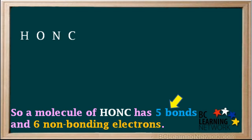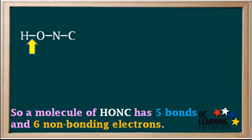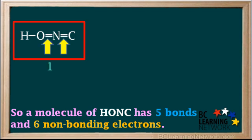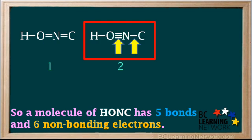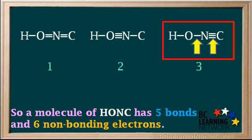We now find the possible arrangements which will give this molecule a total of 5 bonds. We start by putting a bond between each atom, which accounts for 3 bonds out of 5, so we need to add 2 more. Hydrogen can only form a single bond, so that bond must remain single. One possible arrangement is a double bond between O and N, and a double bond between N and C. A second arrangement would be a triple bond between O and N, and a single bond between N and C. A third arrangement would be a single bond between O and N, and a triple bond between N and C.